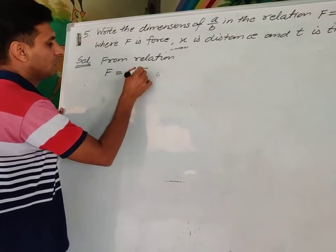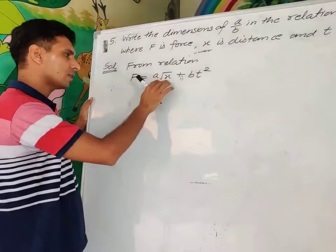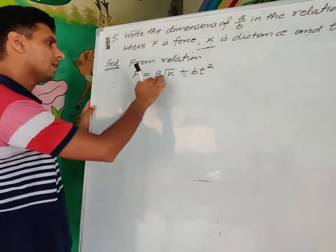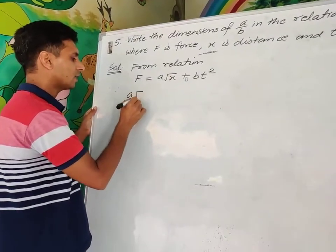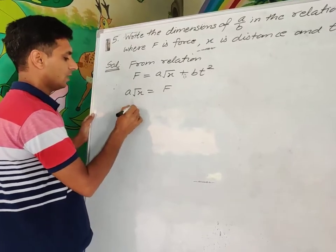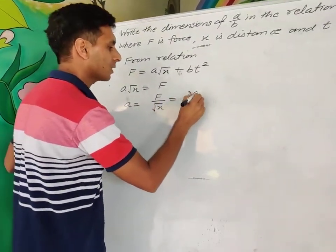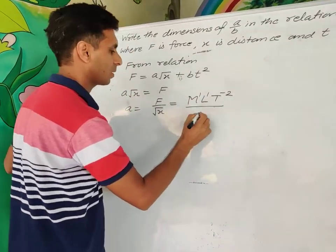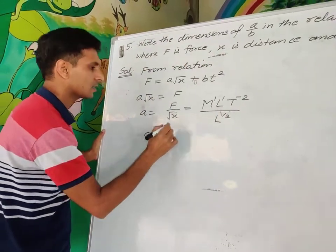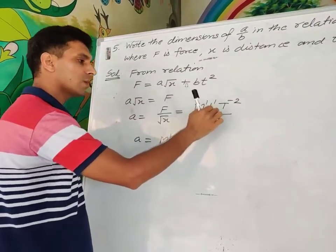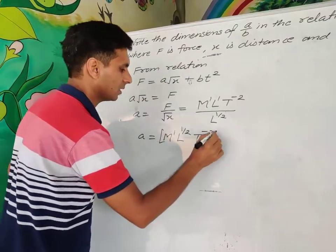From the relation F = a√x + bt², since F is force, every term equals force. So a√x = F, giving a = F/√x. Dimensions: a = M¹L¹T⁻² / L^(1/2) = M¹L^(1/2)T⁻².